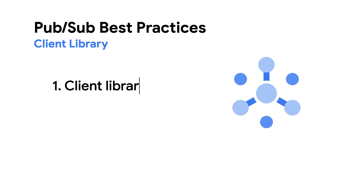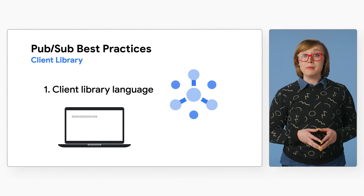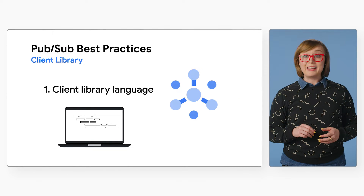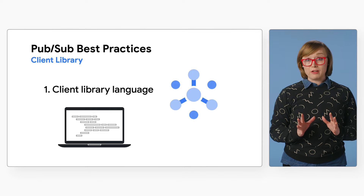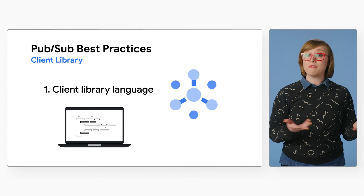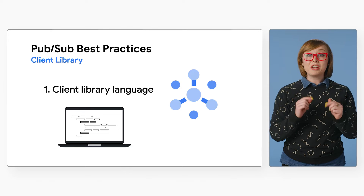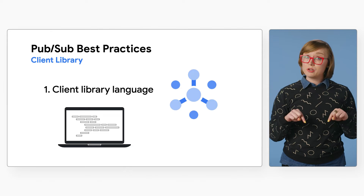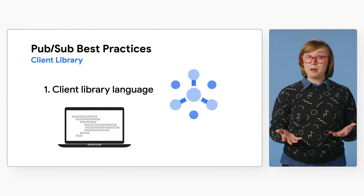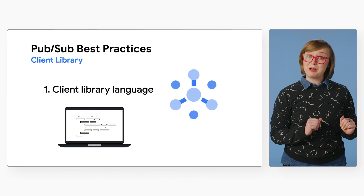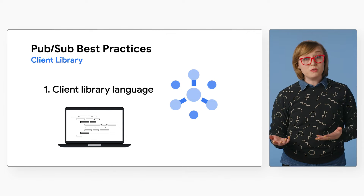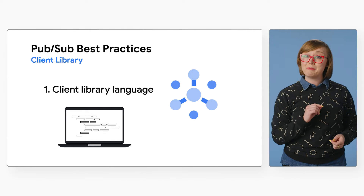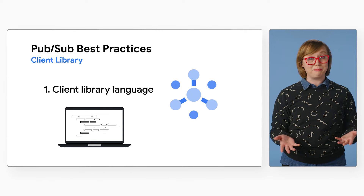Number one: client library language. When using PubSub, take into consideration the client library language you will choose. We recommend using the Java client library over Python for performance reasons. Check out the link in the description to dive deeper into our blog post on Testing Cloud PubSub Clients to Maximize Streaming Performance, to see some useful graphs and data comparing Cloud PubSub performance by language.